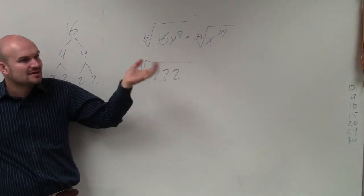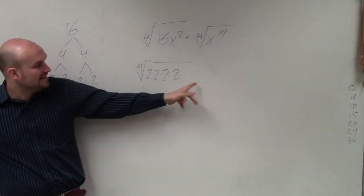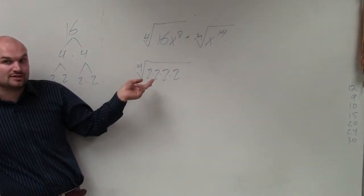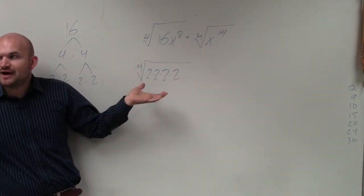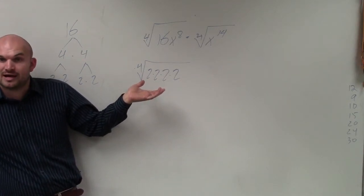So we want to find the same number multiplied by itself four times. We can either write it out like I did with the 2's, or if I wrote something out multiplied by itself four times, that's the same thing as raising it to the fourth power.